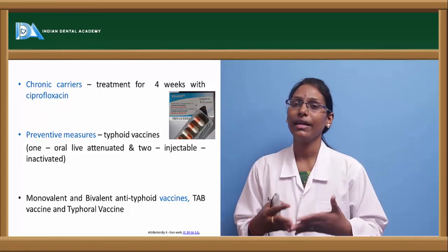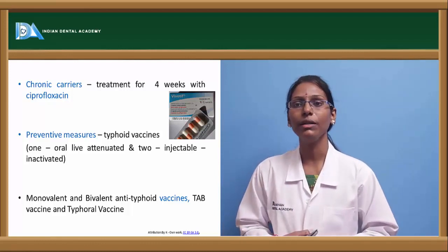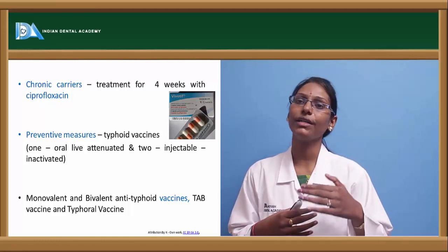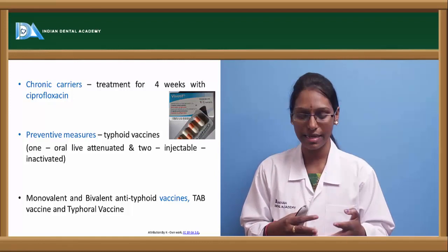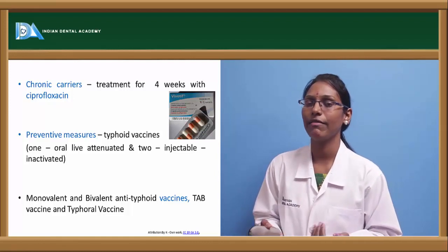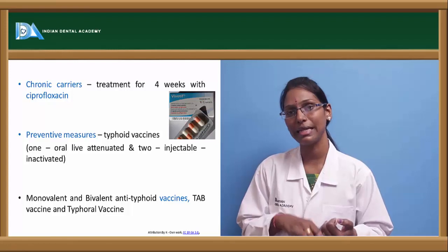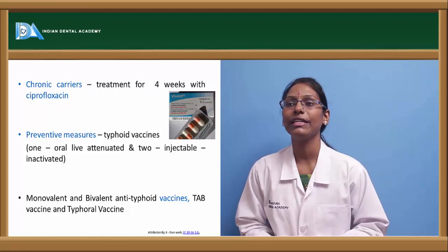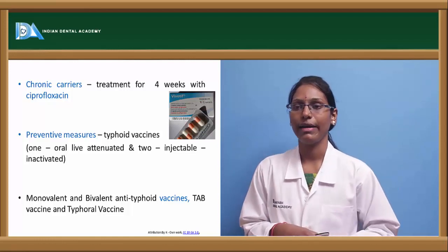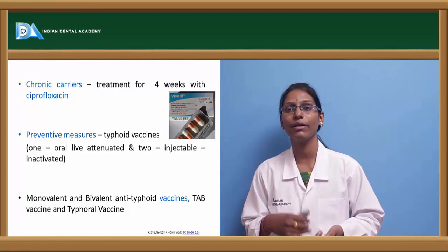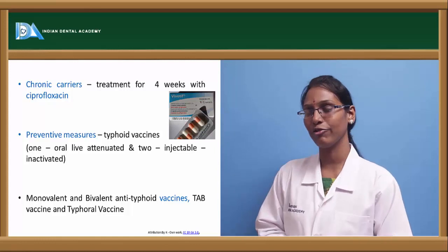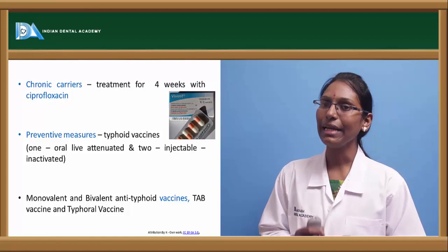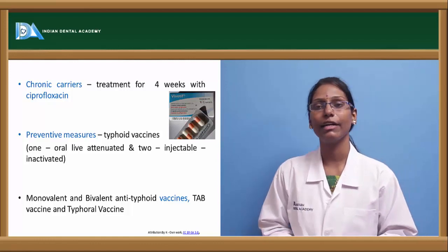There are many typhoid vaccines available to provide immunity and prevent further typhoid attacks. Oral typhoid vaccines include a live attenuated vaccine; injectable inactivated vaccines are also available. Other available vaccines include monovalent and bivalent anti-typhoid vaccines, TAB vaccine — which covers typhoid, paratyphoid A and paratyphoid B — and typhoral vaccines.